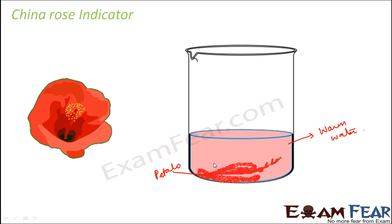It is not dark red immediately. First it will be slightly pink, then it will become a little more reddish. So when the water becomes colored, you should know that this solution is now ready to act as an indicator. This is how we prepare the China Rose indicator.